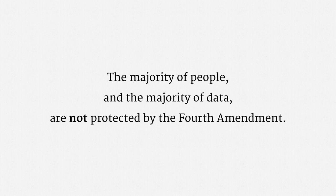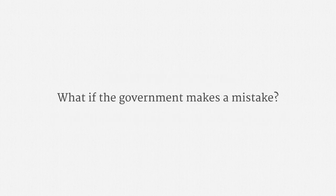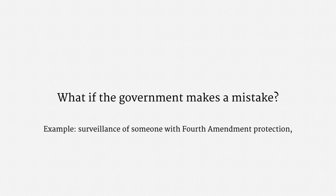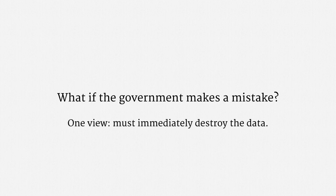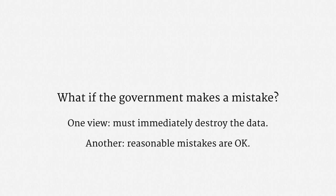So it's easy to see why this area of law is so controversial, especially because of the global internet. Now, what happens if the government makes a mistake and gives someone less protection than they're entitled to? For example, what if the government surveils someone who does have Fourth Amendment protection but the government believes they don't? One view, seemingly adopted by at least one FISA court judge, is that the government has to immediately destroy the data — if the government afforded too little protection, it can't benefit from that. Another view, at times articulated by the executive branch and some scholars, is that some reasonable mistakes are okay: if the government made a decent attempt at locating a person or data and just happened to get it wrong, that's permissible.